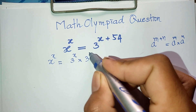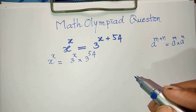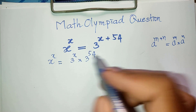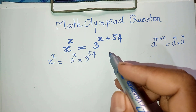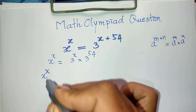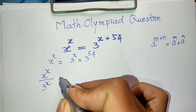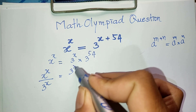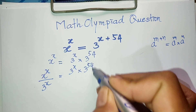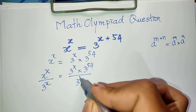Now I divide both sides of this equation by 3 to the power 8. So 8 to the power 8 divided by 3 to the power 8 equals 3 to the power 8 multiplied by 3 to the power 54, divided by 3 to the power 8.